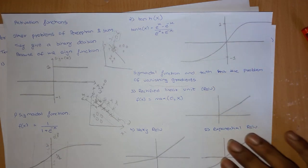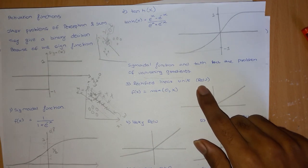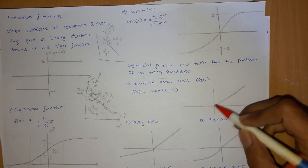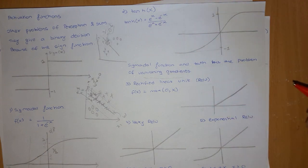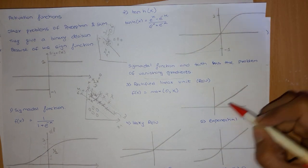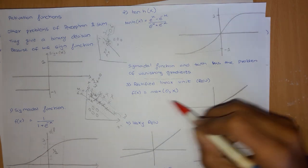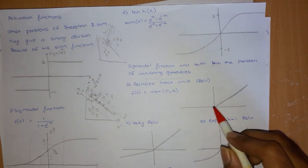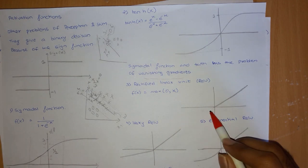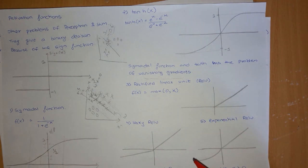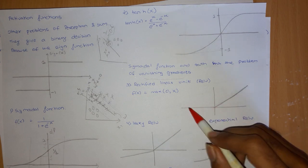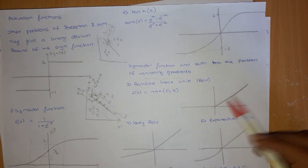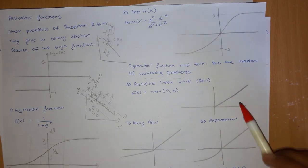To address vanishing gradients, we can use a ReLU function — a Rectified Linear Unit. It is not a linear function: for the positive half it is a straight line, but for the negative half it is strictly zero. It is defined as max(0, x). This is also a non-linear function and helps a lot in neural networks.